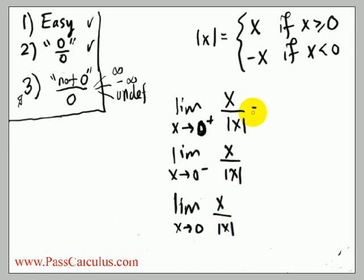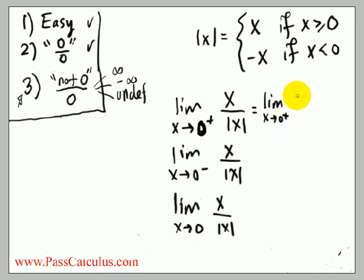For the right-hand limit of x over |x| as x goes to 0, notice this is of type 0 over 0. But if x is a small positive number, then the absolute value of x is just x. So we get the limit as x goes to 0 from the right of x over x, which simplifies to the limit of 1, and that equals 1.